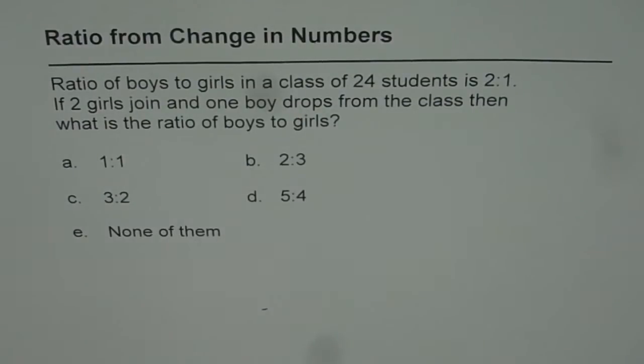Now we will understand how the ratio changes with changes in numbers. Question is, ratio of boys to girls in a class of 24 students is 2 to 1. If two girls join and one boy drops from the class, then what is the ratio of boys to girls?